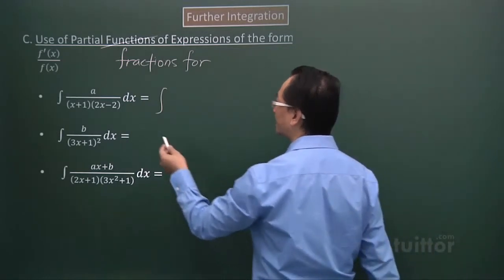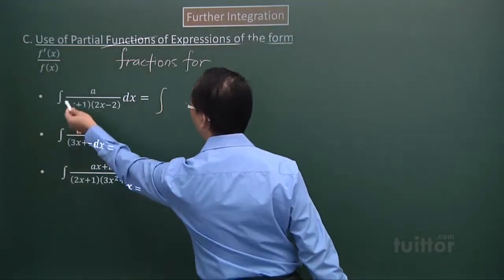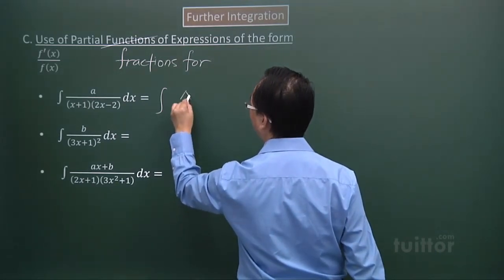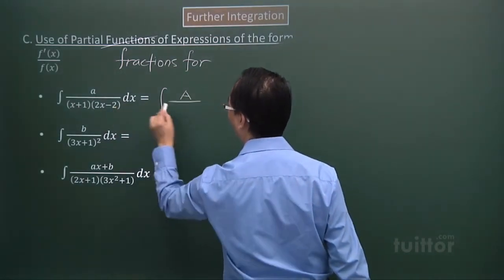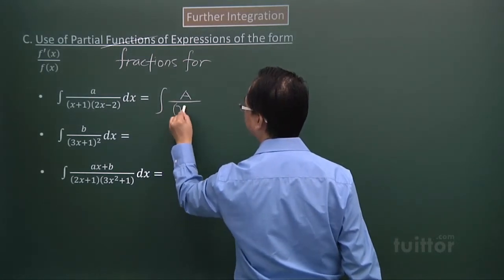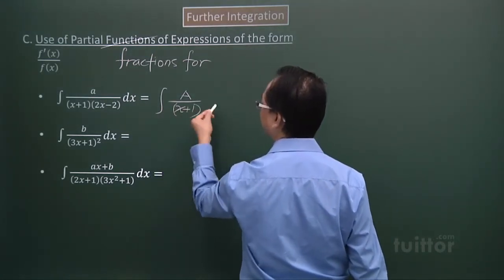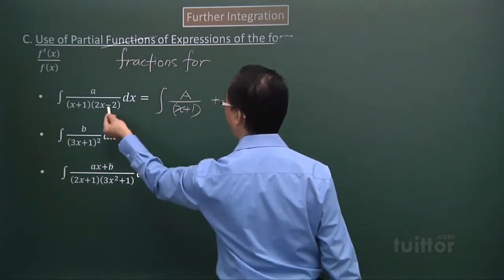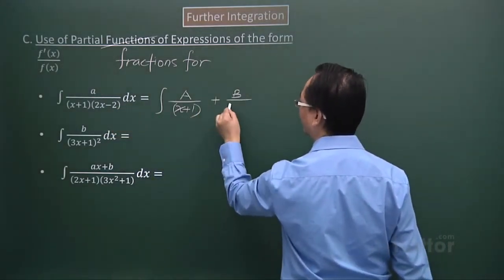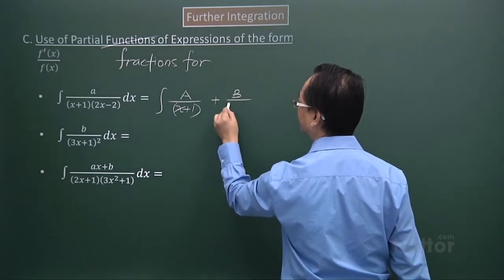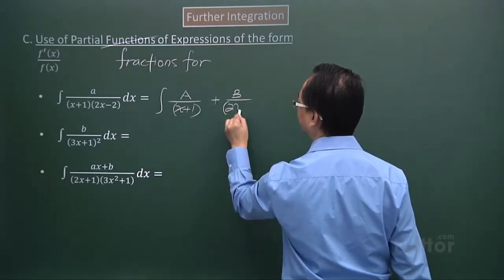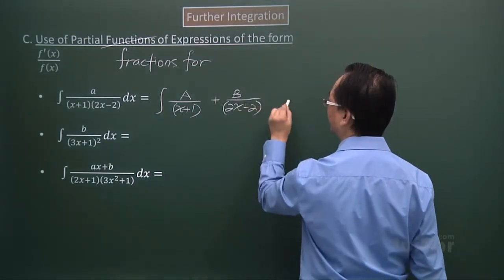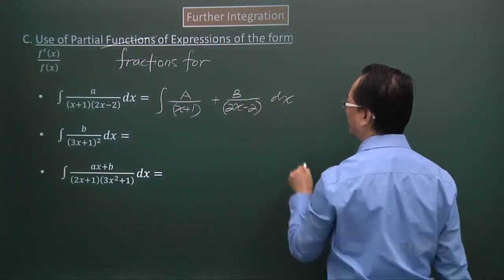So in this case, given a general one like that, the partial fraction will be A, a constant, over one of the linear factors, plus B over the other linear factors. And then integrate these expressions with respect to x.